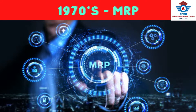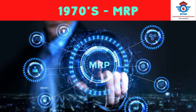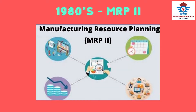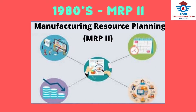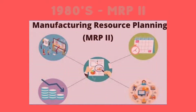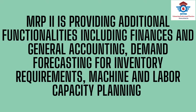Going ahead, in the 1980s the term MRP-2, or manufacturing resource planning, was popularized across the globe. MRP-2 was developed to expand upon MRP-1, providing additional functionalities including finances and general accounting, demand forecasting for inventory requirements, and machine and labor capacity planning — all of which were lacking in MRP-1. Hence MRP-2 became a more strategic and advanced version for manufacturers around the world.